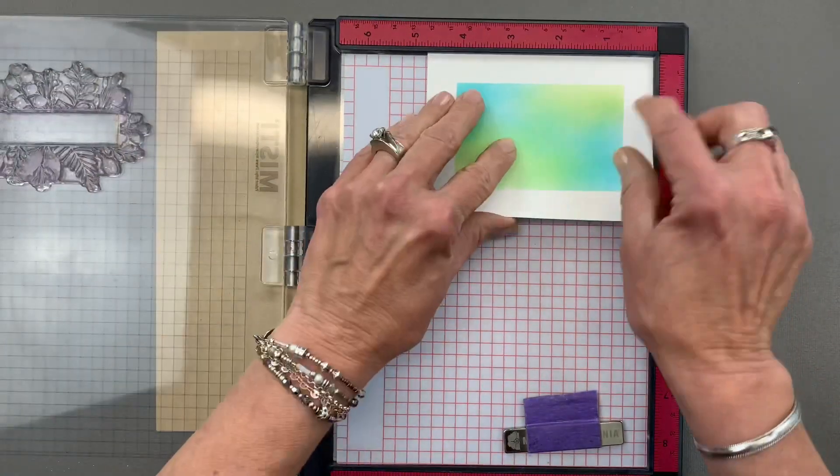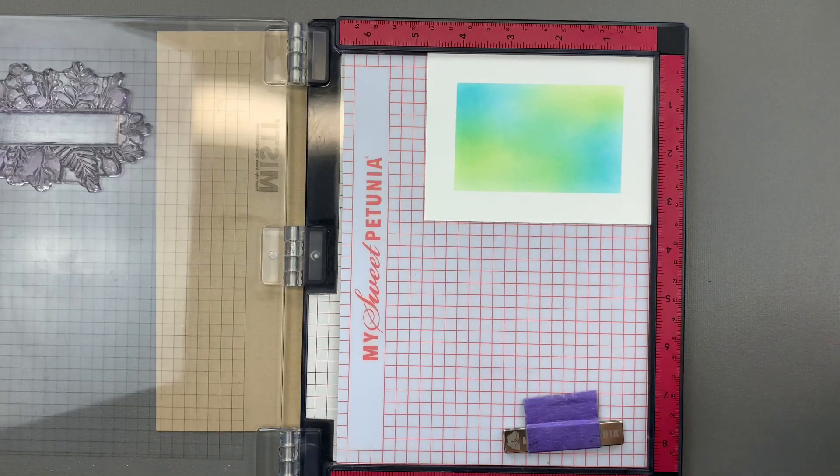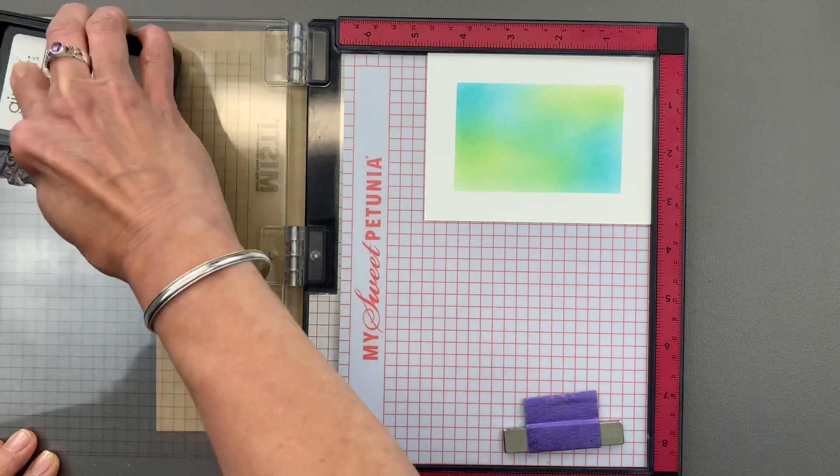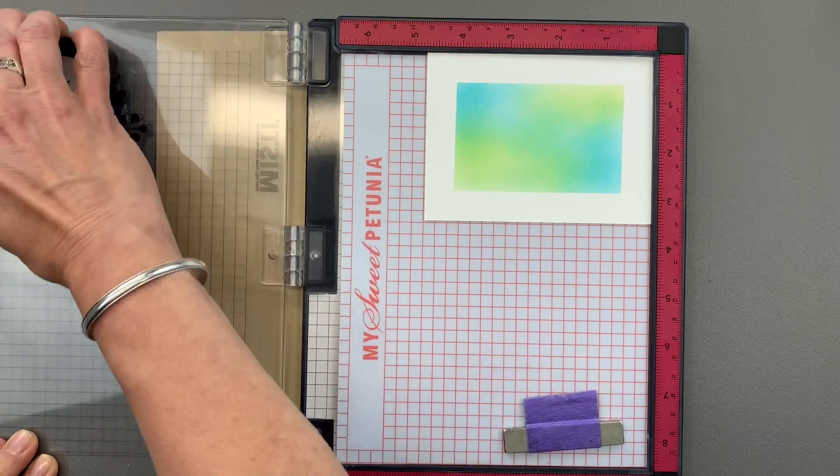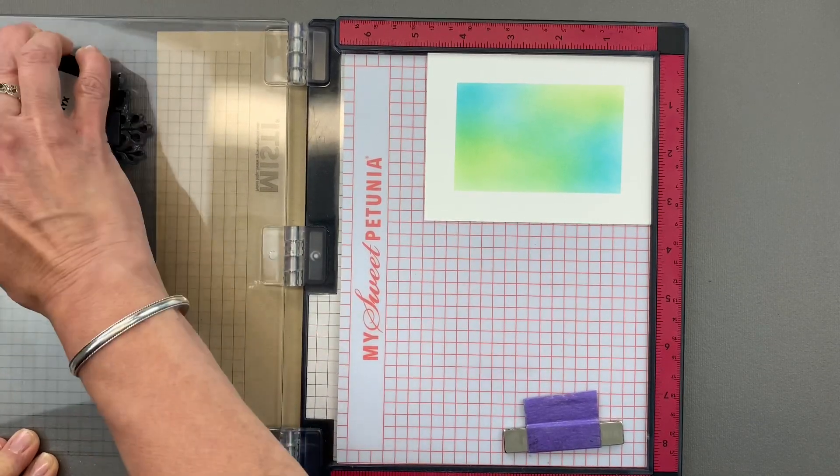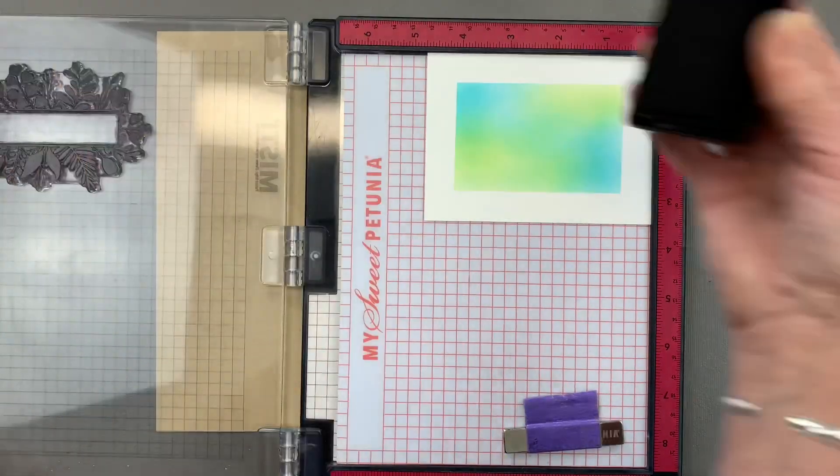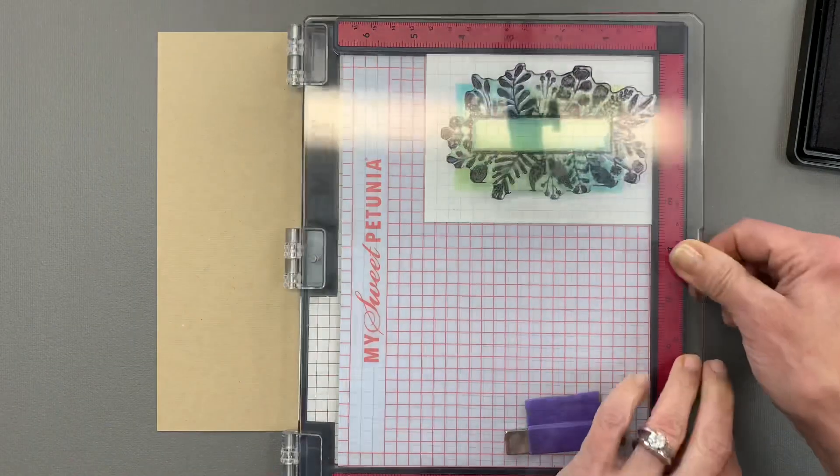Okay, now I'm going to use some Black Onyx ink and I'm going to ink this up real well and I think I'm going to double stamp it just to make sure it's nice and dark. So I'm going to stamp that.